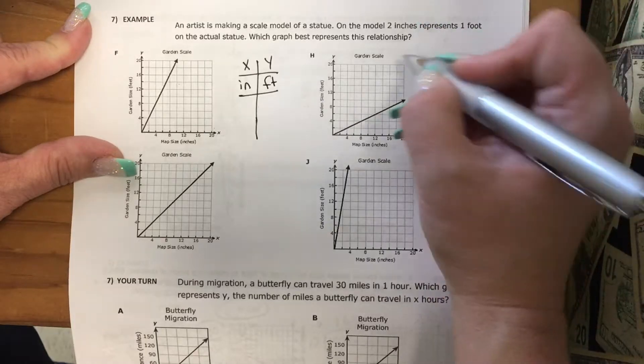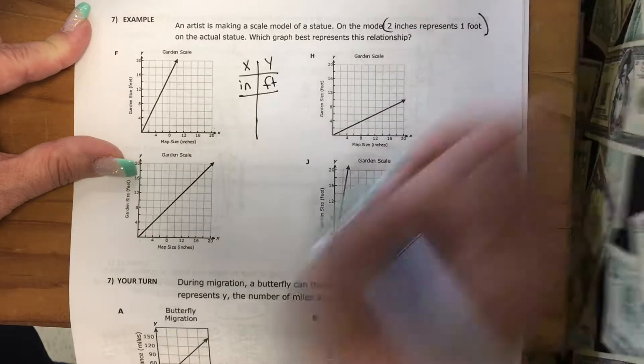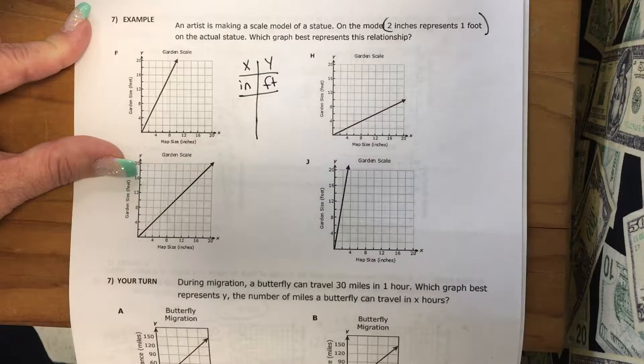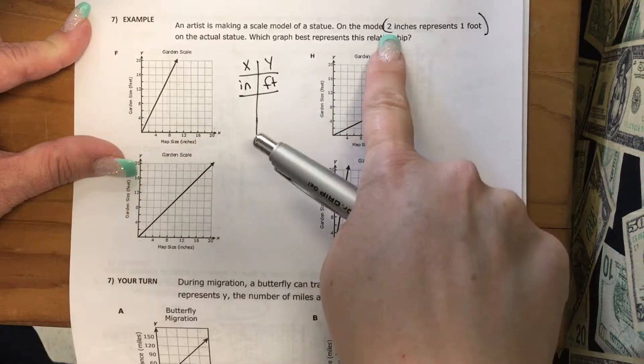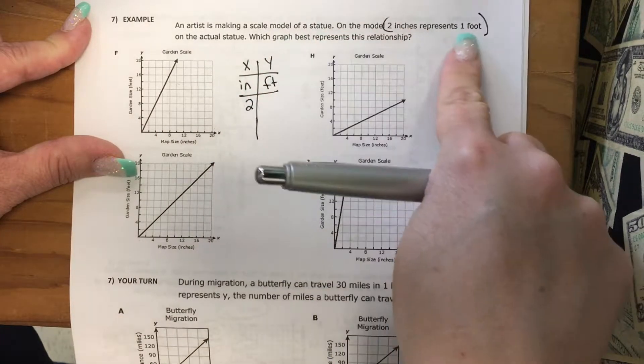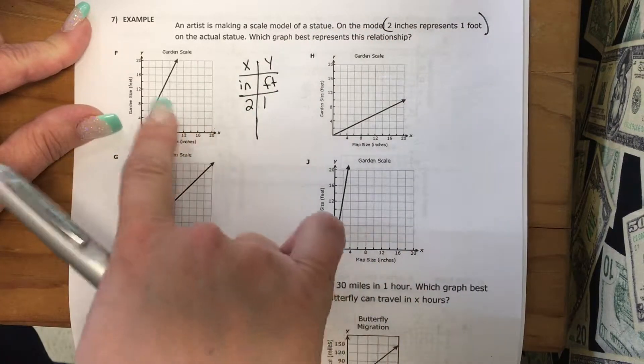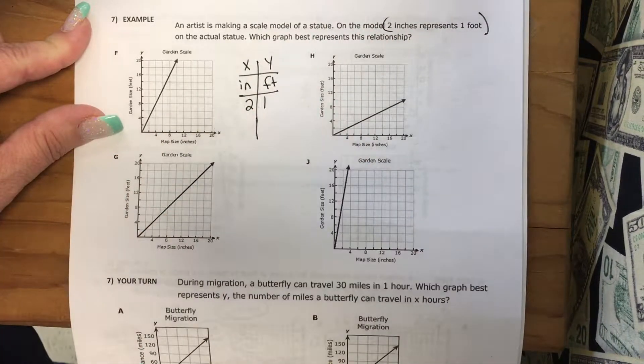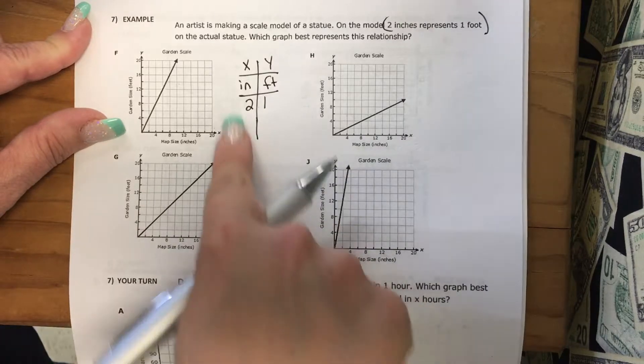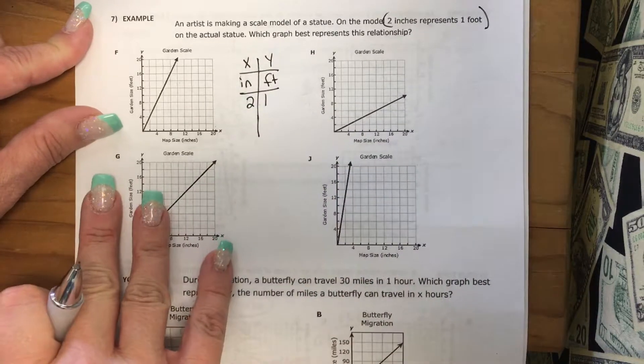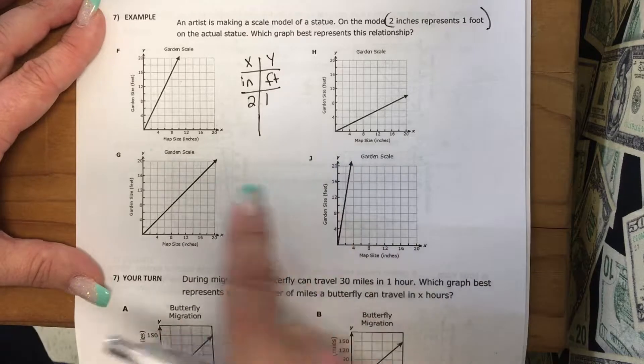The conversion in the problem is that 2 inches represents 1 foot. So I would put that on my table. That 2 inches represents 1 foot. So this is an ordered pair that I need to see if it matches on this table or not. So my x needs to be 2 and my y needs to be 1.